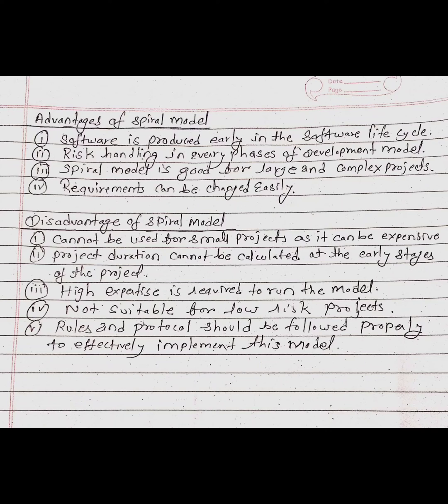Disadvantages of spiral model: cannot be used for small projects as it can be expensive, project duration cannot be calculated at the early stages of the project, high expertise is required to run the model, not suitable for low-risk projects, and rules and protocols should be followed properly to effectively implement this model.